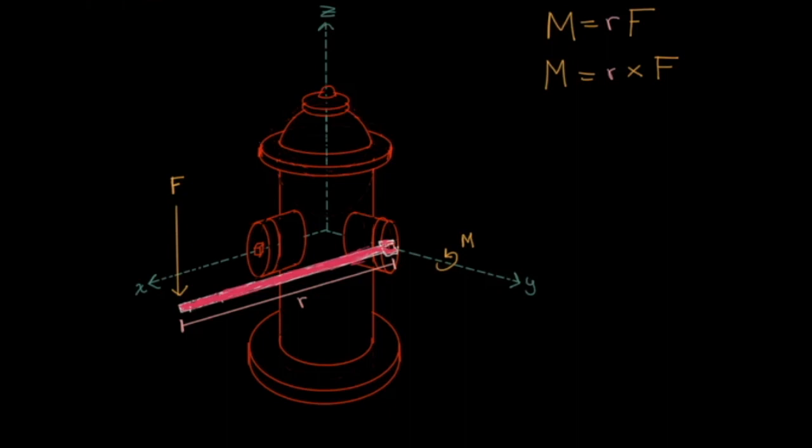It's important to remember that the moment is always R cross F, and never F cross R. R always comes first. Now, as a vector, we're going to represent F this way, so that the vectors are tip to tail. That is, the tip of the first vector, R, touches the tail of the second vector, F. This will come in handy for visualizing the moment when using the right hand rule.